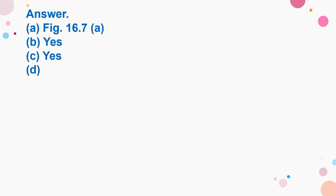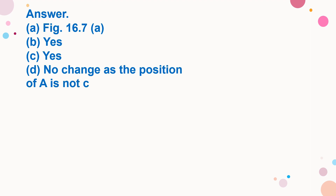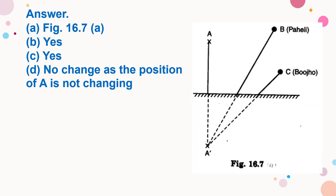Figure 16.7 indicates the position of the object at A. This is position A in the plain mirror. Can Peheli at B see this image? Yes, Peheli at B can see this image. Can Bojo at C see this image? Yes, Bojo at C can also see this image. When Peheli moves from B to C, where does the image of A move?